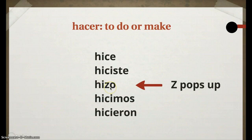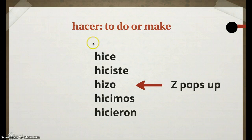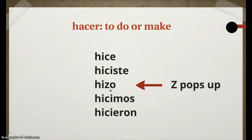Now, it may seem like the Z is there for no reason, but there is a reason, and it's because of this C right here. In Spain, where Spanish was invented, this word will be pronounced 'hacer' with a TH sound. So, if we were to keep this C instead of putting a Z, it would say 'ico.' So, we have to replace it with the only other letter in Spanish that makes the TH sound, and that would be the Z.